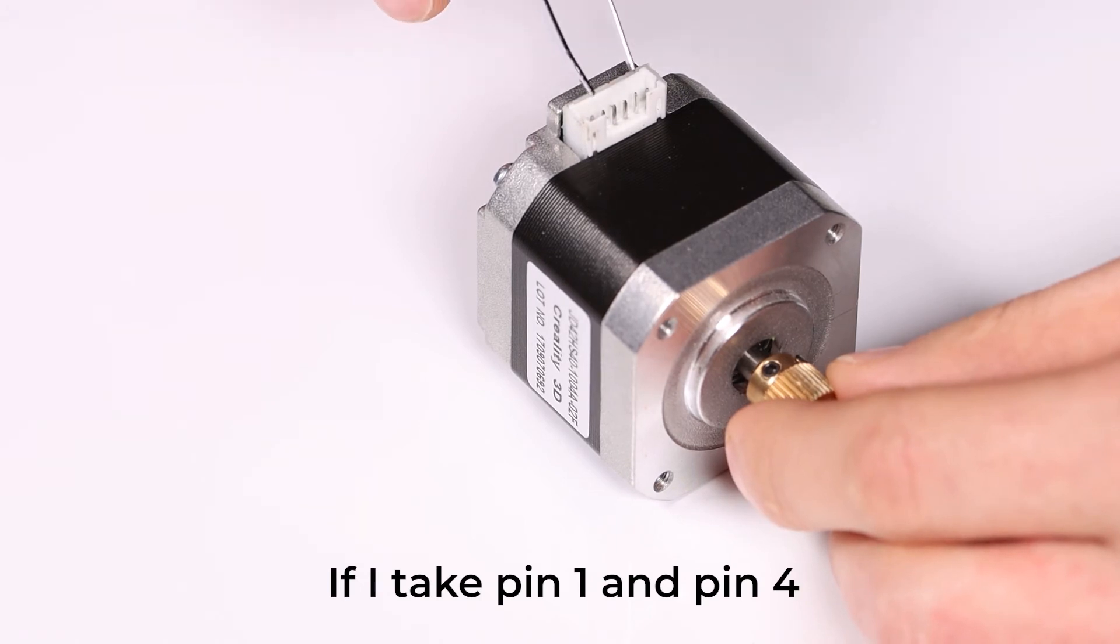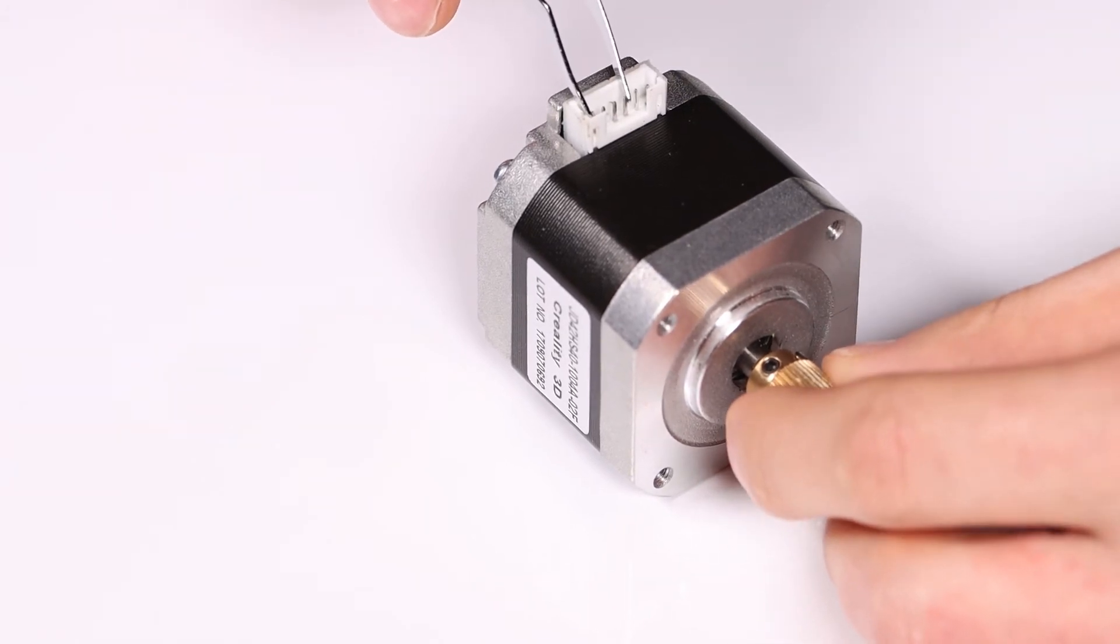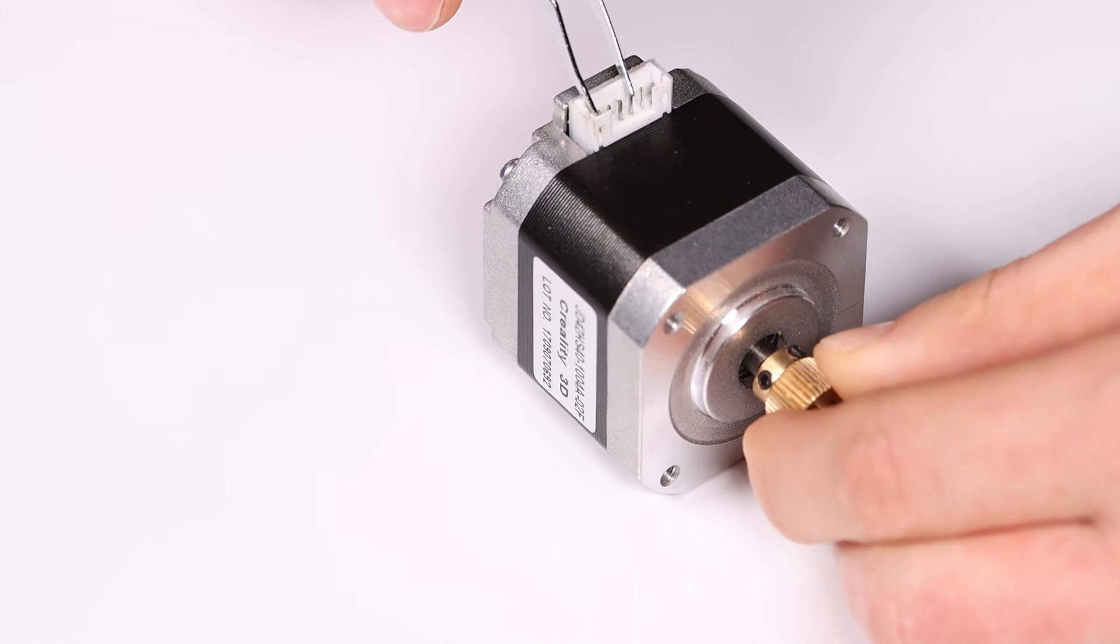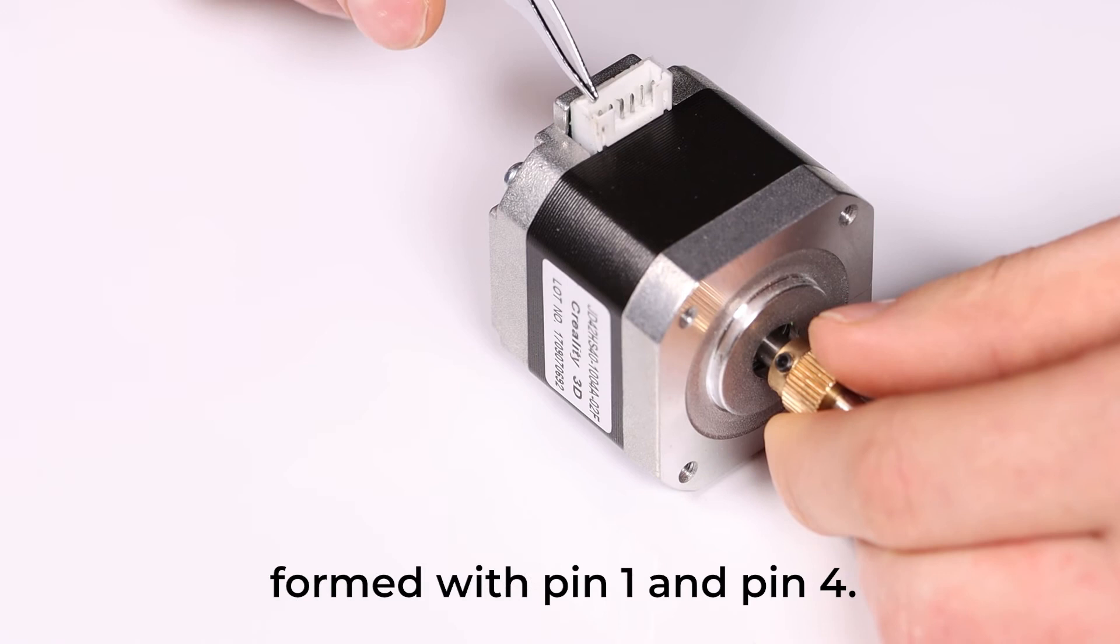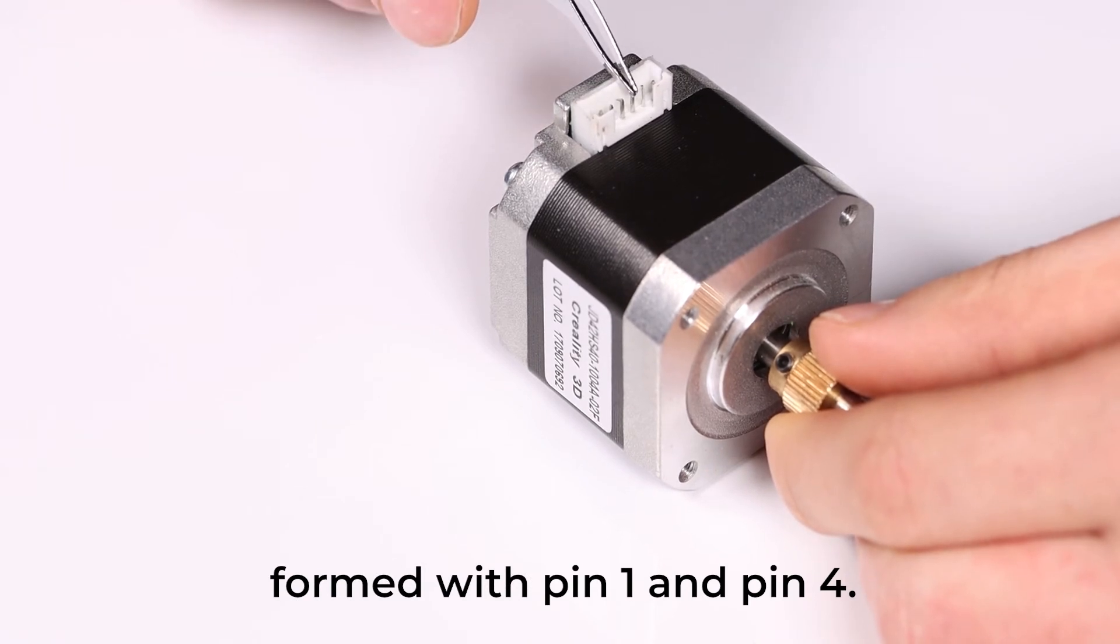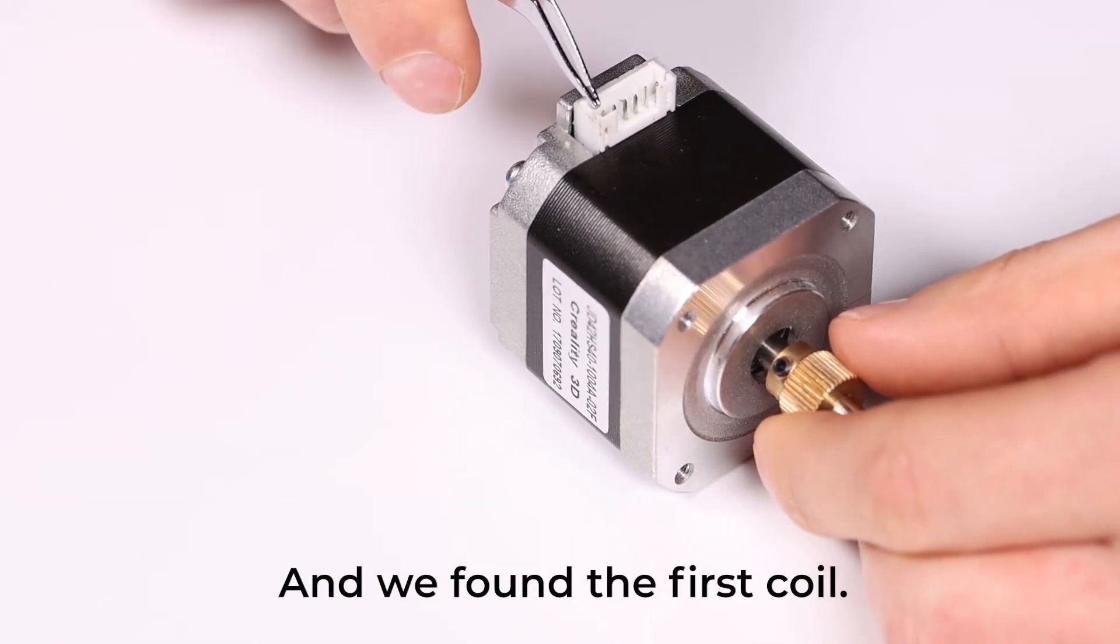If I take pin one and pin four, we can see that one coil is for pin one and pin four. And we find the first coil.